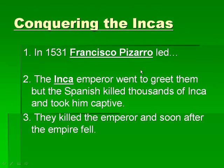Moving on to the Incas. In 1531, Francisco Pizarro led 180 men into Peru — that's where the Incas are. The Inca Emperor went to greet them, but the Spanish killed thousands of Inca and took him captive. The Spanish did a lot of the same things they did to the Aztecs — used their enemies against them — and once the Emperor was dead, everything basically fell apart.